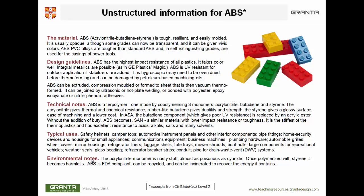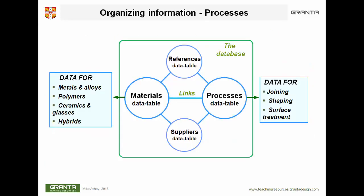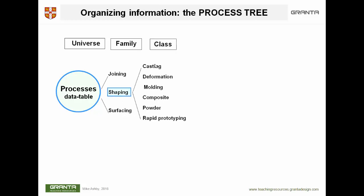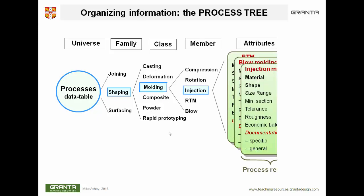Let's now switch to processes. The classification parallels almost exactly that for materials. First there are families: joining, shaping, surface treatment. Within any one of these there are classes — casting processes, moulding processes, powder processes. Look at any one of these and you find members of that class: compression moulding, injection moulding, and so forth. And once you reach this point, if you open that, you find records for those particular members of the processing universe.